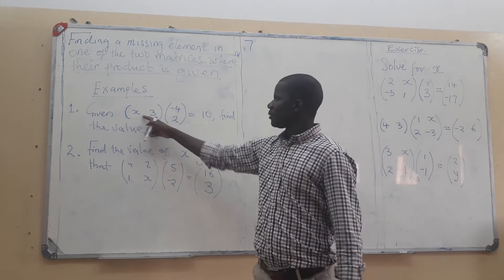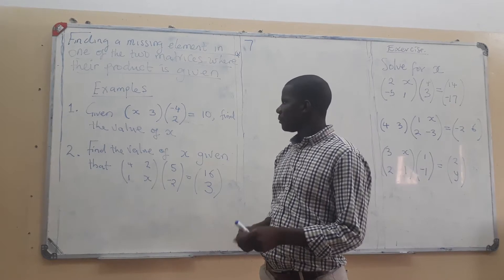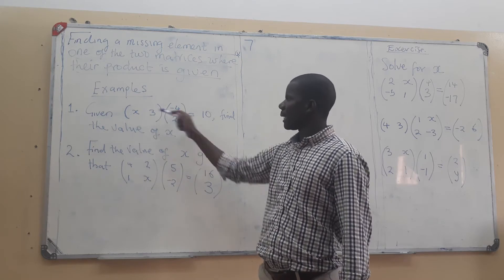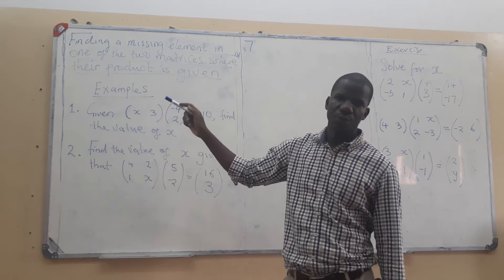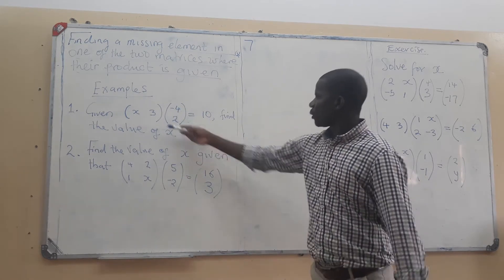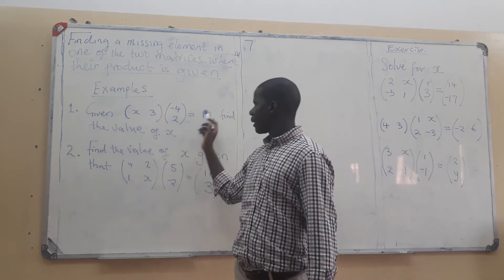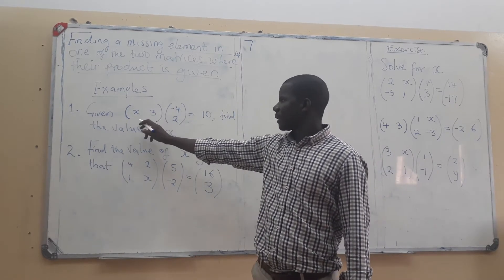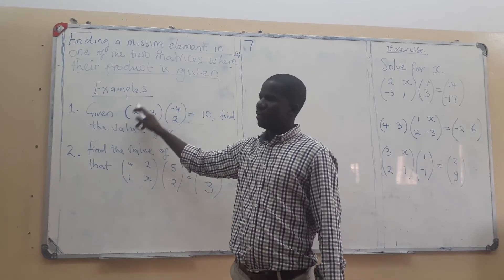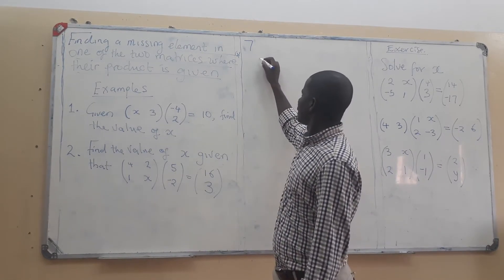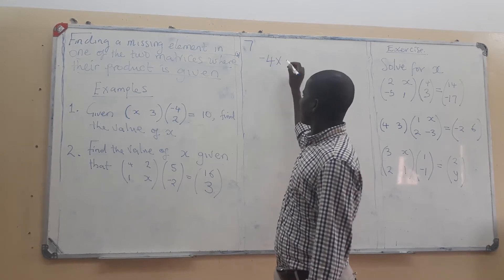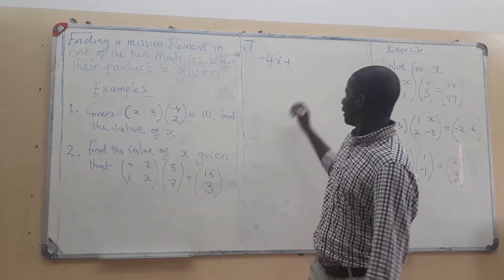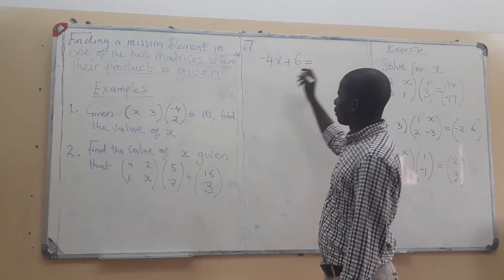We multiply the row by each column. In this row we have two elements, and each one should multiply its corresponding element. So this one multiplied by this one, and this one multiplied by two. We multiply these two matrices and equate to 10. This gives us x multiplied by negative 4, which is negative 4x, plus 3 multiplied by 2, which gives us 6.